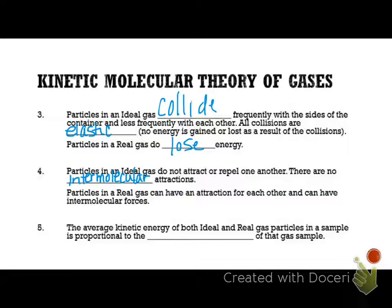Number five says the average kinetic energy of both the ideal gas and the real gas is proportional to the temperature of the gas. So if the temperature increases, the kinetic energy increases. That is directly proportional. If one goes up, the average kinetic energy goes up, that means the temperature is going up. But if you increase the temperature, the particles move faster and they increase their kinetic energy.